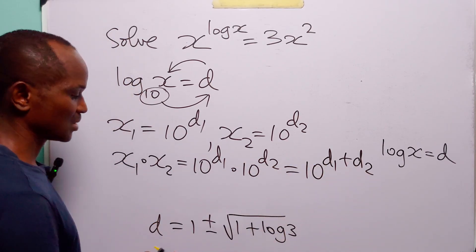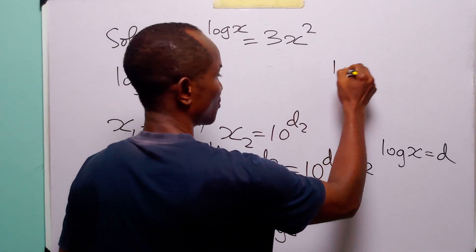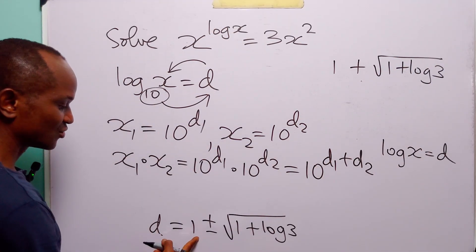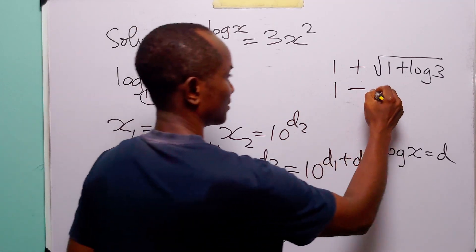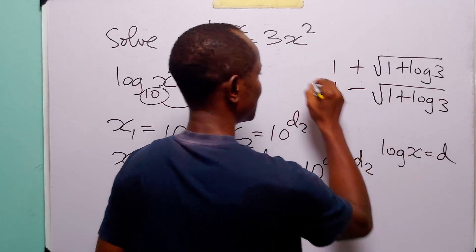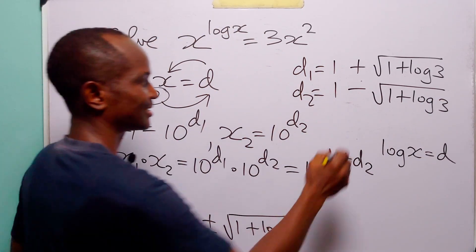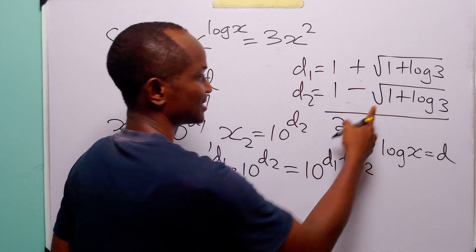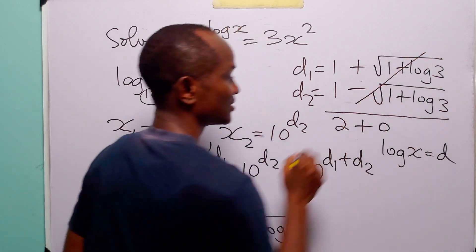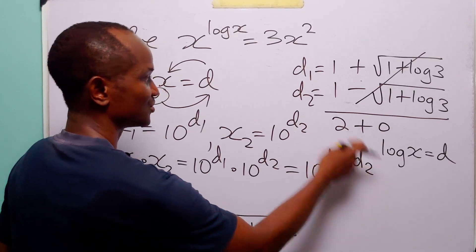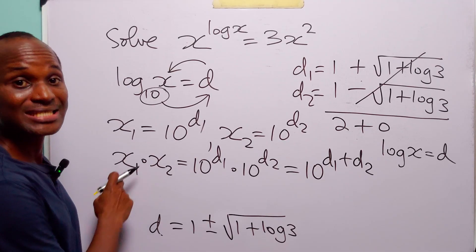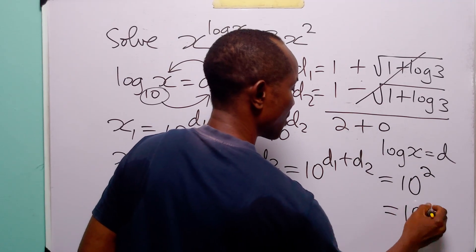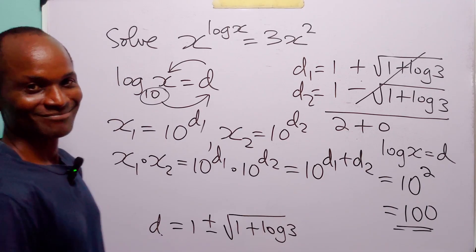From our solution, d₁ = 1 + √(1 + log 3) and d₂ = 1 - √(1 + log 3). When we add them, the square root terms cancel and we get d₁ + d₂ = 2. Therefore the product of the roots, x₁ · x₂ = 10² = 100.